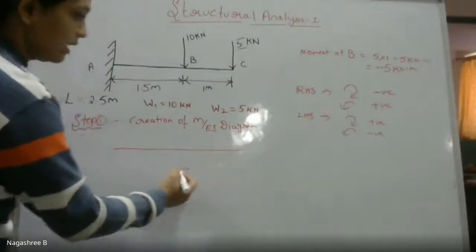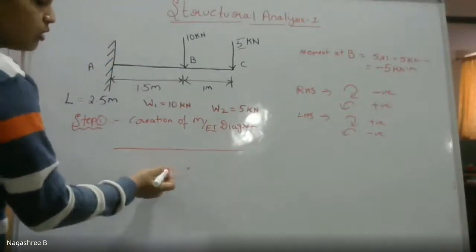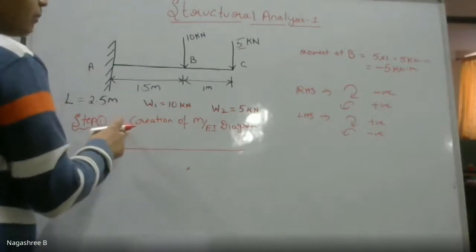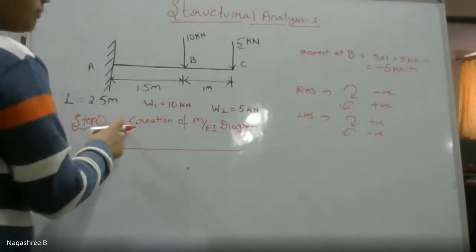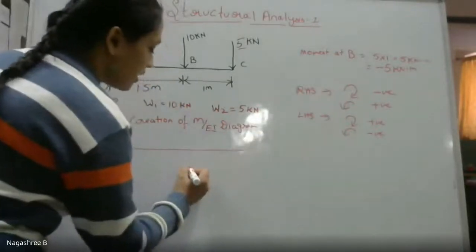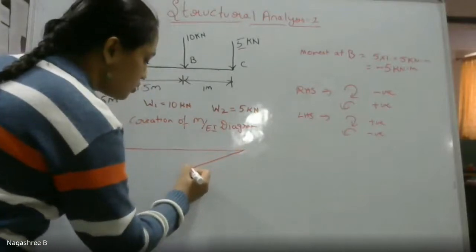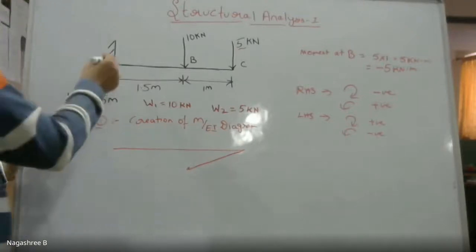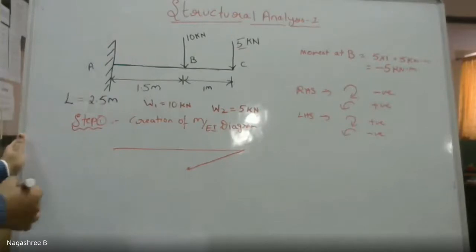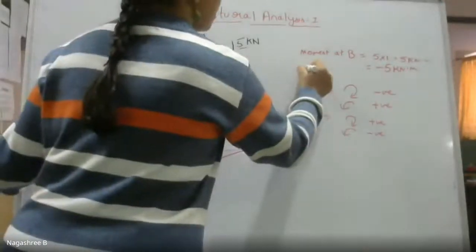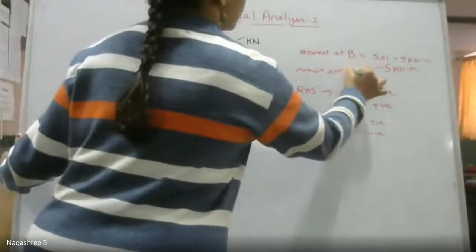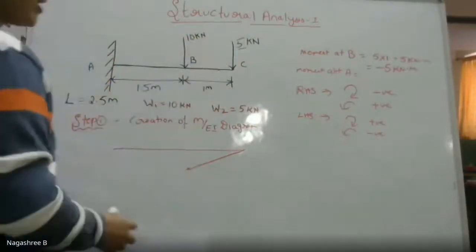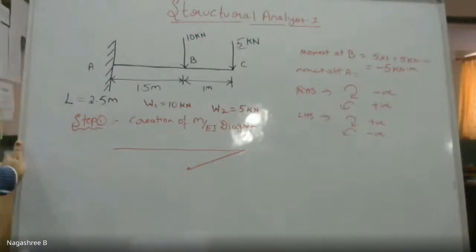I have drawn a baseline here. Moment values that are negative should be drawn below the baseline, and positive values should be drawn above the baseline. I have got minus 5, so it is below the baseline, shown as linear variation equal to minus 5. The next point is point A, where I need to find the moment. Before point A, there are two loads: 10 kN and 5 kN.